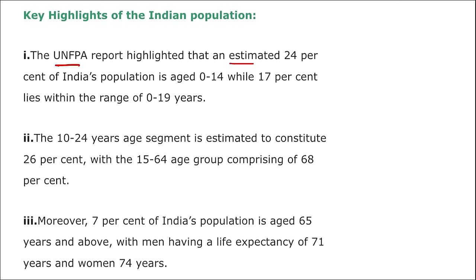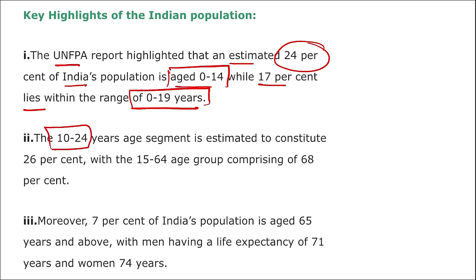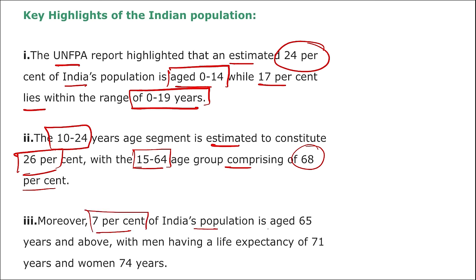The UNFPA report highlighted that an estimated 24% of India's population is aged 0–14 years, 17% is in the 0–19 range, and the 10–24 age segment constitutes 26%. The 50–64 age group comprises 68%, and 7% of India's population is aged 65 and above, with men having a life expectancy of 71 years and women 74 years. UNFPA is headquartered in New York, USA; Executive Director is Natalia Kanem; founded in 1969.